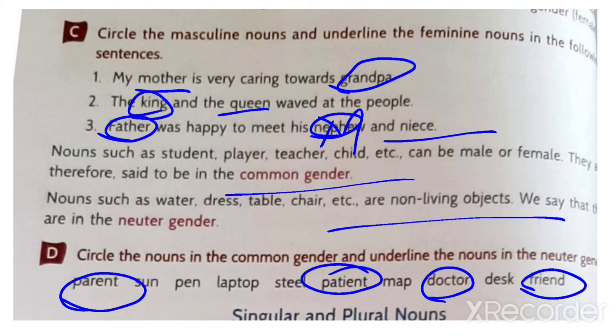Come to the neutral gender - non-living things. Sun, pen, laptop, steel, map and dusk fall under neutral gender.